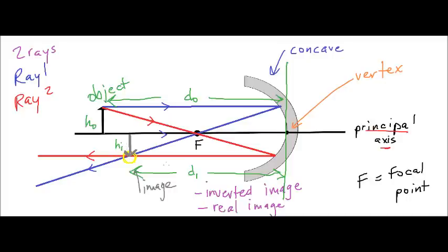As I said, we've got a real image. If I was able to place a screen at that location, I would be able to capture the image. If I moved the screen a little bit, the image would appear blurred because the reflected rays would not be converging at that screen location. This location is where we get the best, sharpest image.